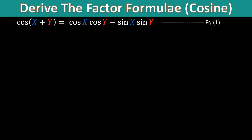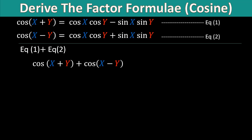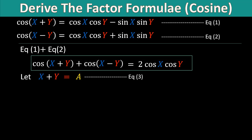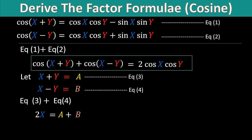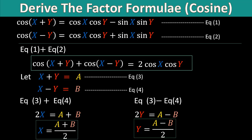We will have the addition formulas for cosine of (x+y) and cosine of (x−y) in equations 1 and 2. We add the equations: cosine of (x+y) plus cosine of (x−y) equals 2 cosine x multiplied by cosine y. We let x+y equal to a and x−y equal to b, and we solve to get x equal to (a+b)/2 and y equal to (a−b)/2.